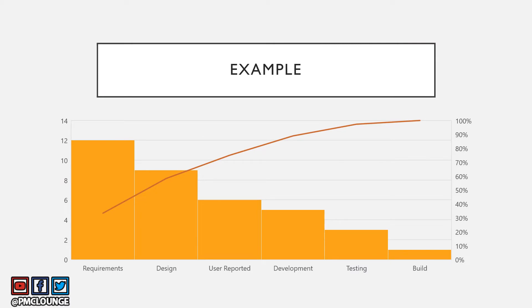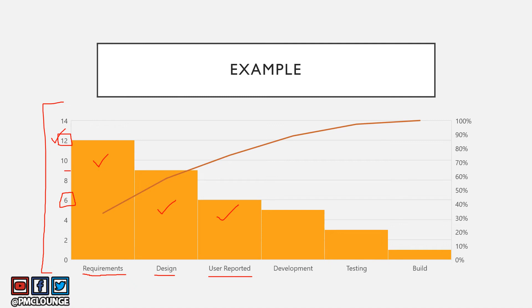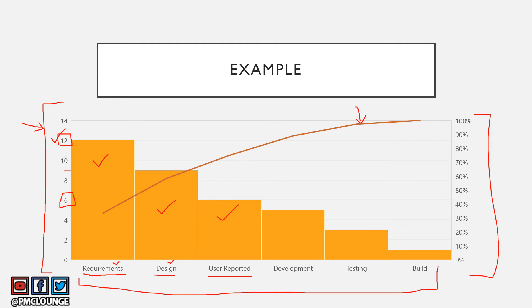Now let's look at an example Pareto chart. The bars show the number of issues — for example, twelve issues in the requirements category, nine in the design category, and six in the user-reported category. There is also a line showing the cumulative percentage. On the left axis you have the number of issues, and at the bottom are the categories of issues — that is how you draw a Pareto chart.